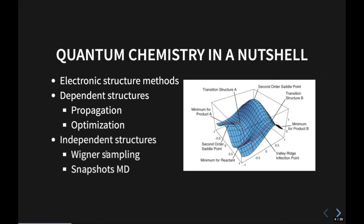On the other hand, independent-structure methods are those where structures do not depend on each other. Examples include Wigner sampling or taking snapshots from a classical molecular dynamics run to compute an absorption spectrum — in that case, all electronic structure calculations can be run independently in a trivially parallel manner. Roughly speaking, the majority of quantum chemistry can be divided into these areas: electronic structure as the core, and then methods for smartly selecting structures and computing the desired properties.